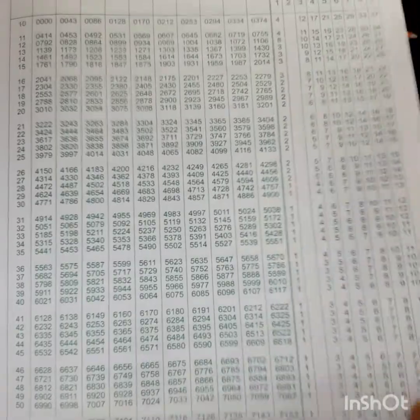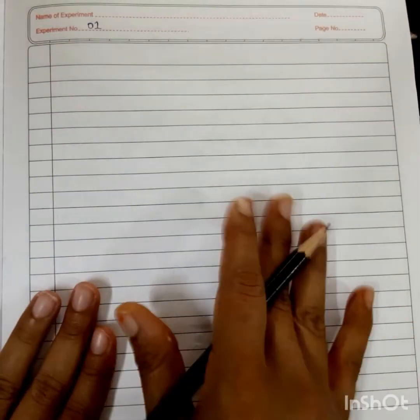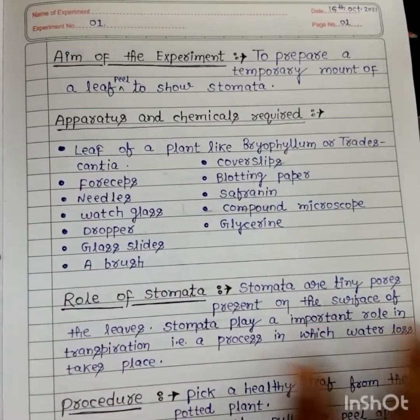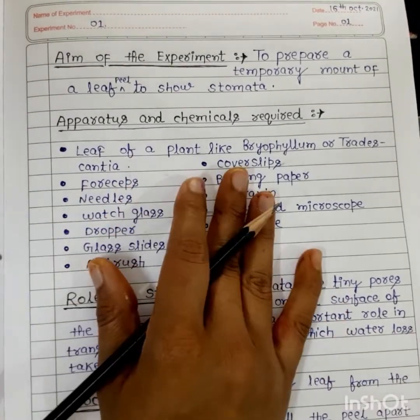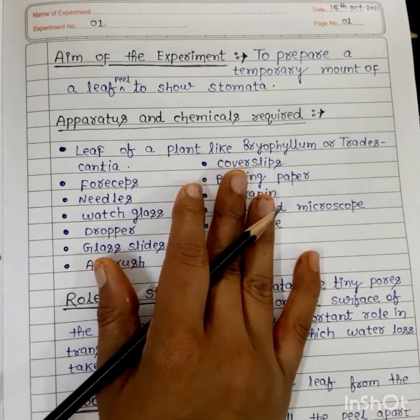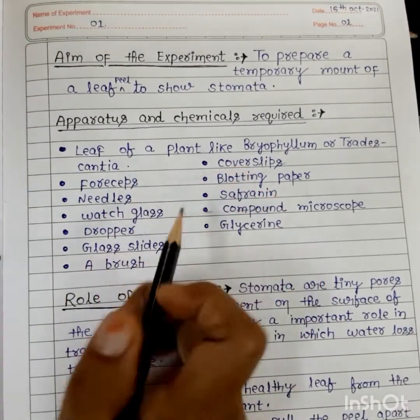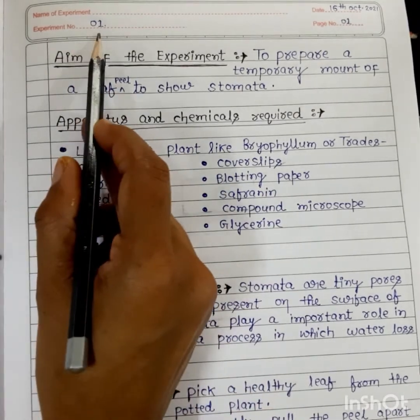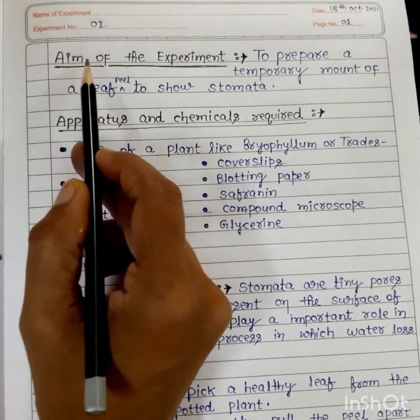Here, some logarithm tables are given. This is the first page of your notebook — don't write from here, leave this page, and start writing from the next page. This is your first page of your practical notebook. I have written here experiment number one.